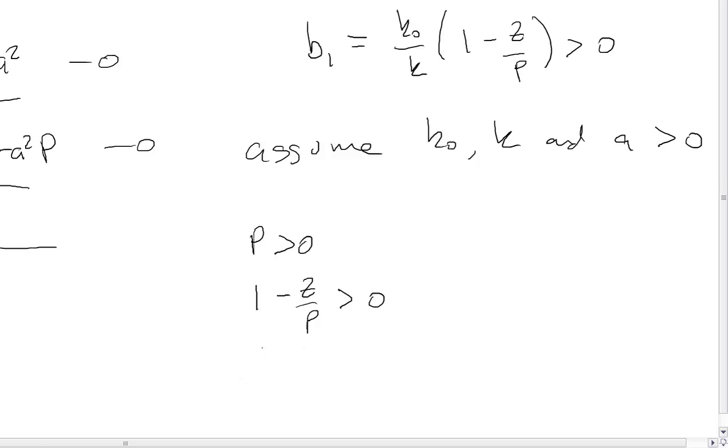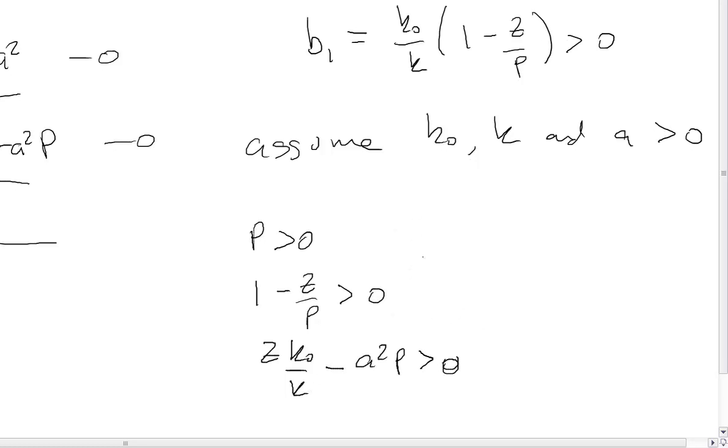We need 1 minus Z over P to be positive. And we need Z K-naught over K minus A squared P has to be positive. So this term allows us to say that 1 has to be greater than Z over P, or in other words, P has to be greater than Z. And we can move this over and then divide through, and we end up with Z over P has to be greater than K over K-naught times A squared.